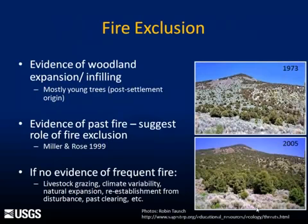This is a great photo because it shows one of the tools we have to document changes in PJ density — especially expansion and infilling — and that is photographic history in terms of photo comparisons between older and newer photos. The other tool is dendrochronology, where we take tree cores, date trees, and determine how old they are. There's no doubt that throughout the Intermountain West there are plenty of examples of infilling and invasion. But it's worth noting there are places where that hasn't happened — the Uncompahgre Plateau stands out as one example where there's been very little evidence of expansion over the past several decades.